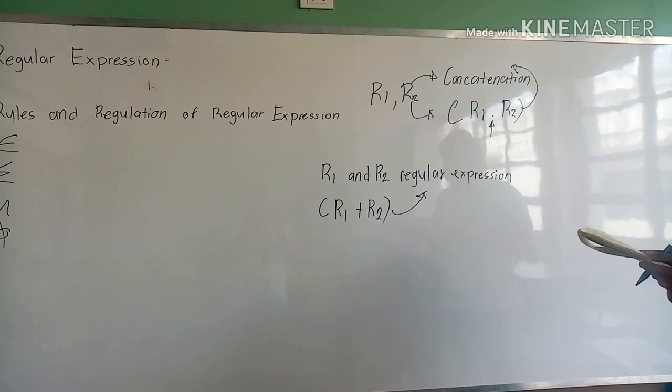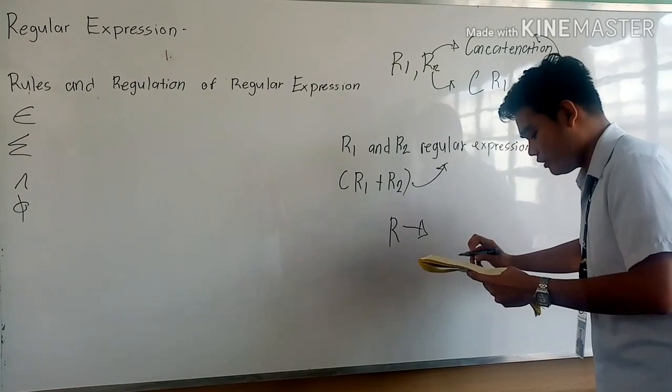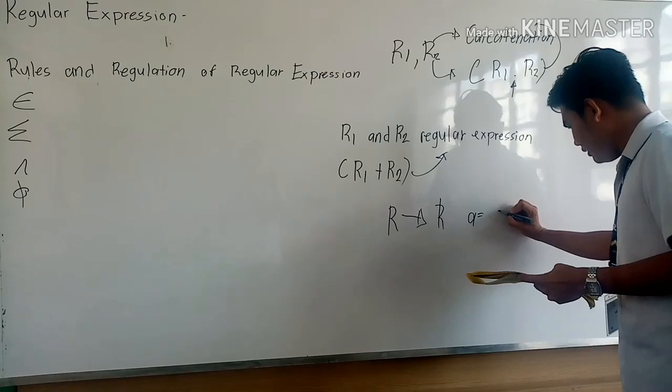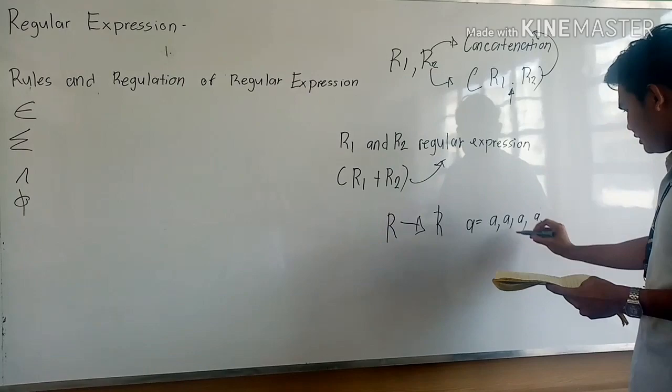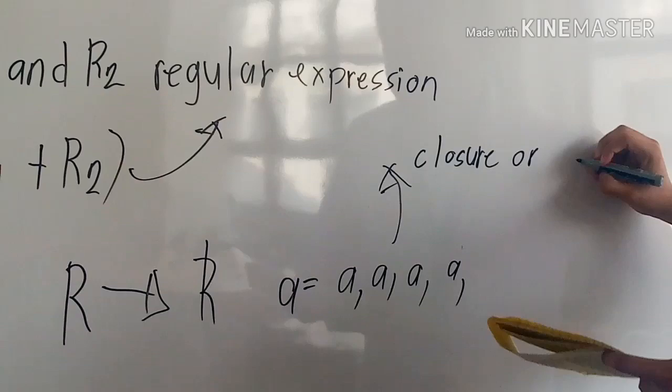Number four: the iteration or closure of a regular expression is also a regular expression. For example, R* — using A as a variable, A* equals A, A, A, A, A and so on. This is called closure or iteration.